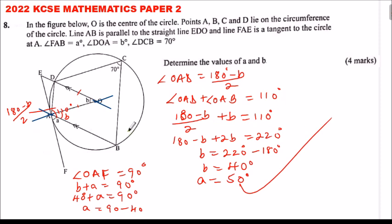The key is to use the information given along with the properties of circles — cyclic quadrilaterals and tangent-radius relationships — to determine the required values. That's how you solve this and earn yourself four marks.